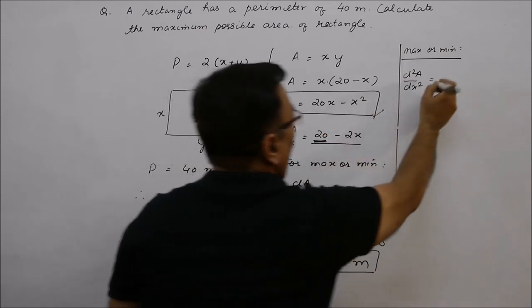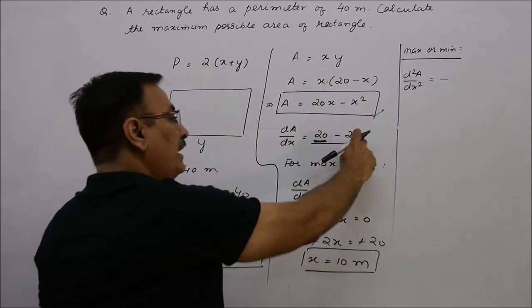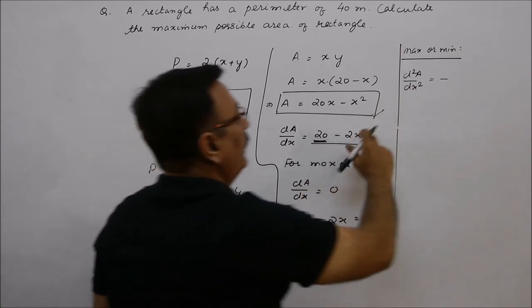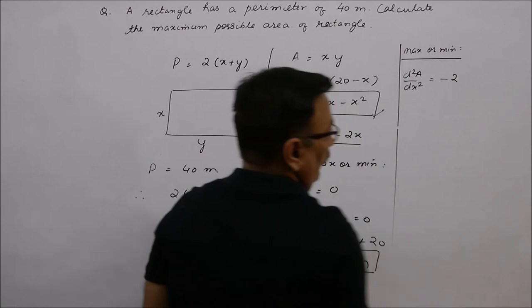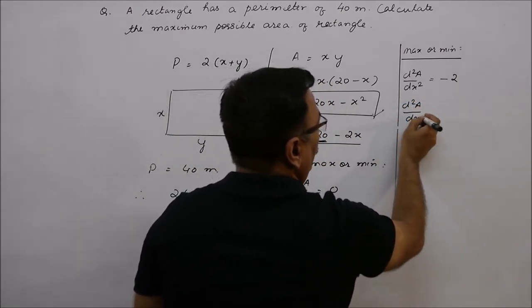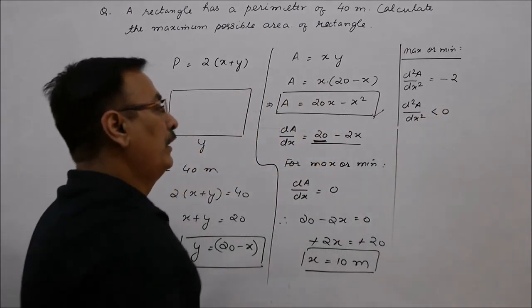We have minus sign and 2. And what is x derivative? When we differentiate 20 minus 2x, this means that the result will be minus 2. Now, d squared A over dx squared is less than zero, a negative value.